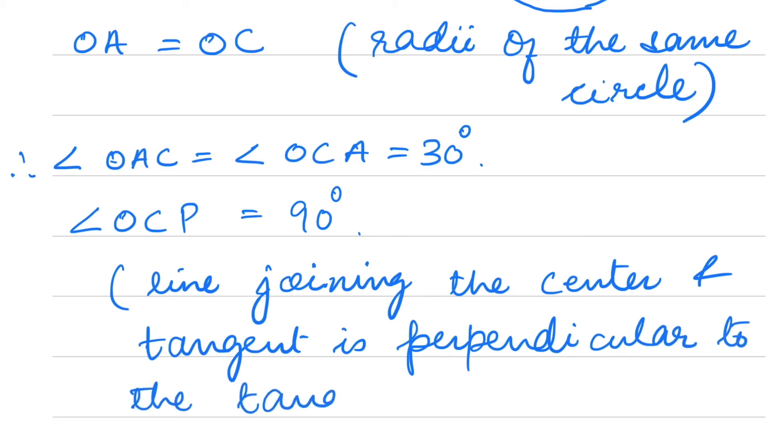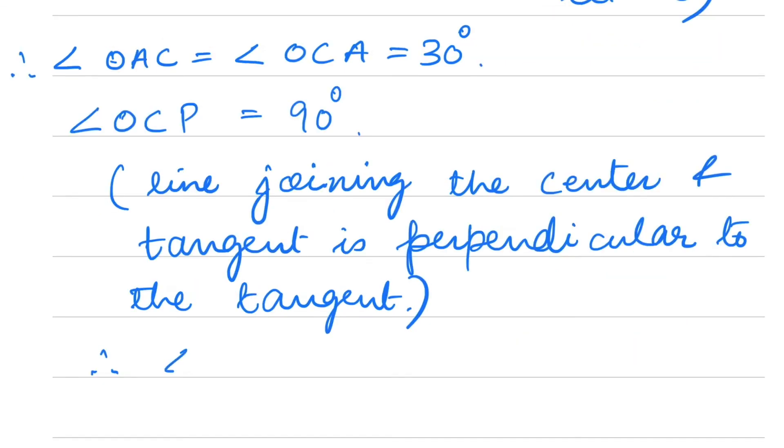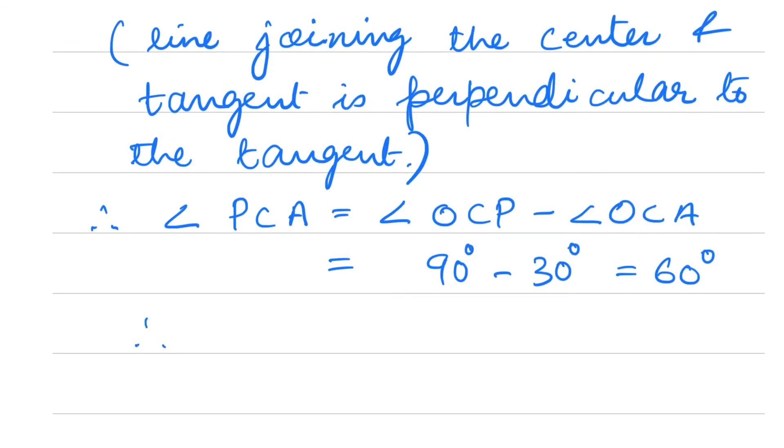Angle OCP equals 90° minus angle OCA. So angle OCP = 90° - 30° = 60°. Therefore, angle PCA is equal to 60 degrees.